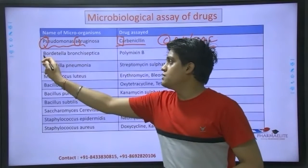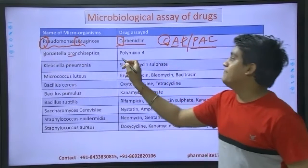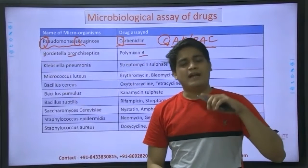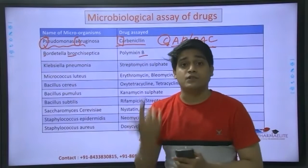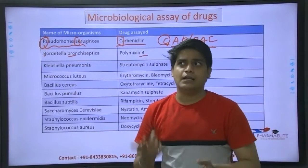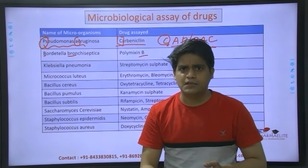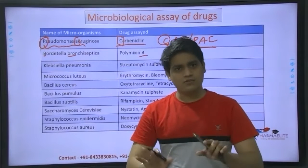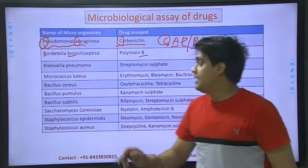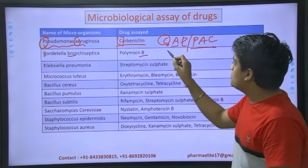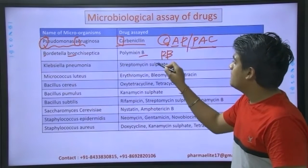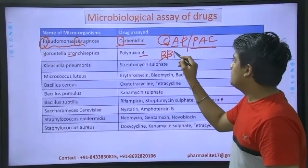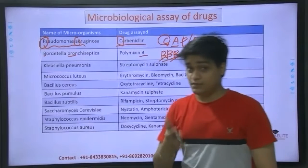Coming to the next, which is Bordetella bronchiseptica, which uses polymyxin B. You might have heard about amphotericin A, amphotericin B, nystatin A, nystatin B, kanamycin A, kanamycin B. VBP - and blood-brain barrier.